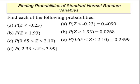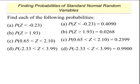Part d: Find the probability that z is between negative 2.33 and 3.99. For this one we have to use the default — if you recall, if you have a z-score greater than 3.49, you use the default of 0.9999. The answer to d is 0.9999.